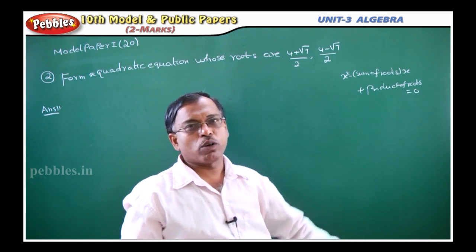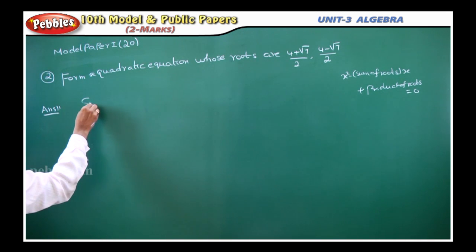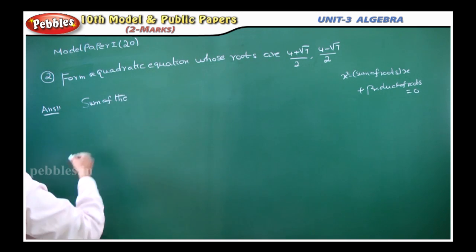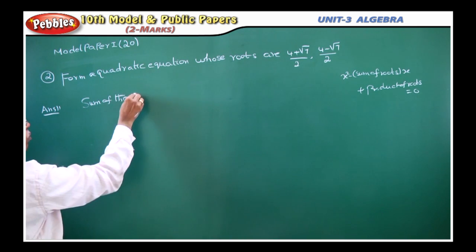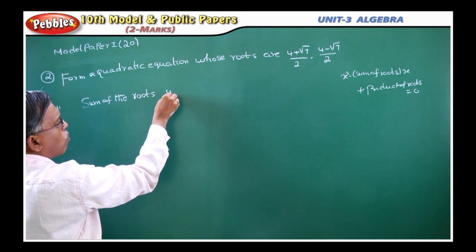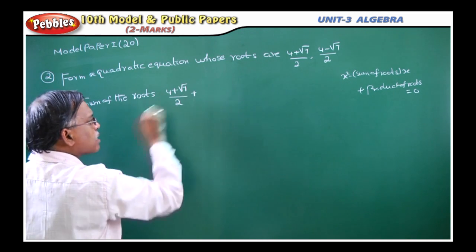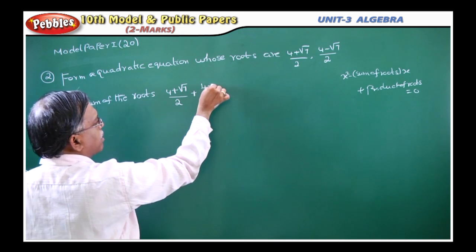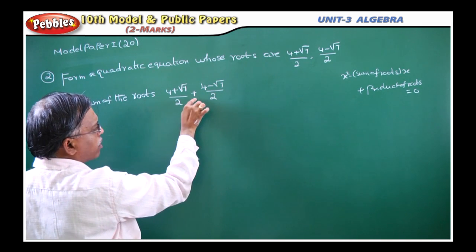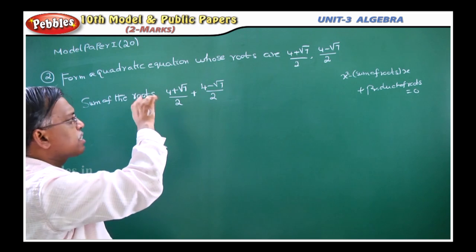Two things only have to be found here: sum of the roots and product of the roots. First we will find the sum of the roots. Sum means addition of each and every root.